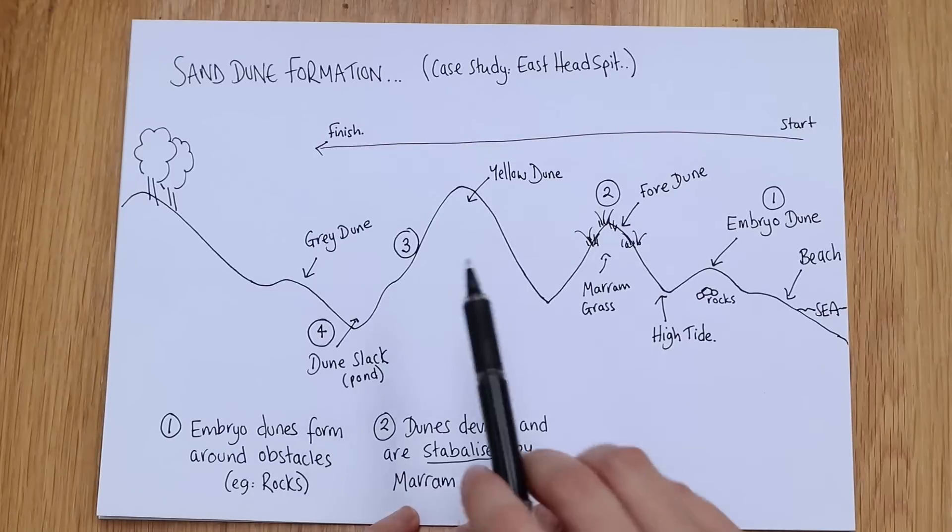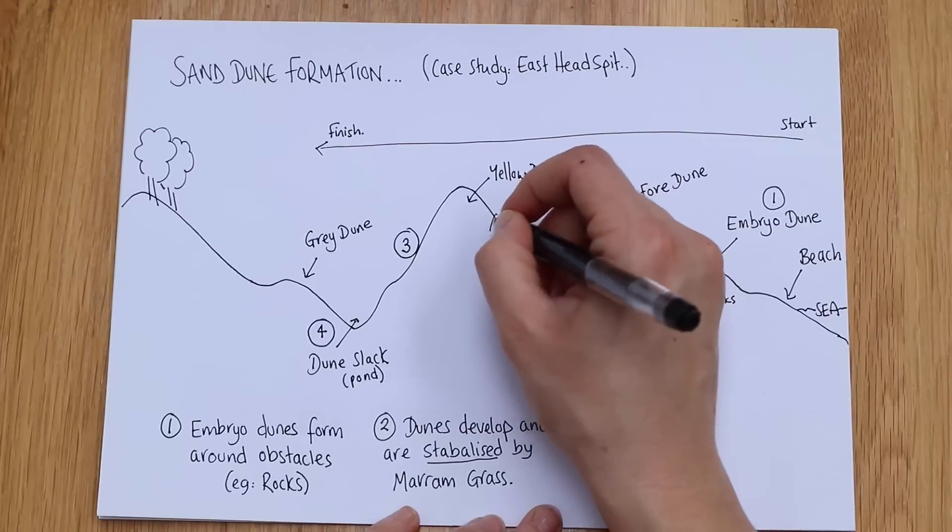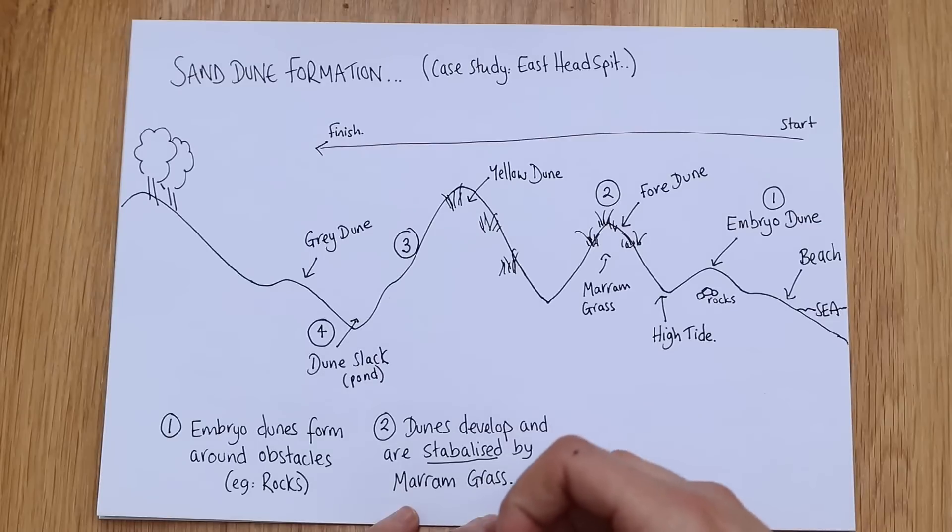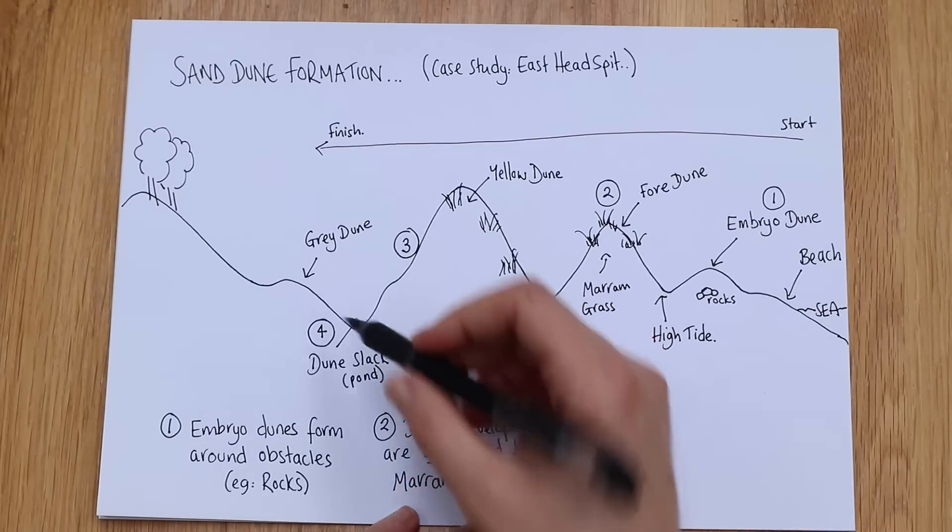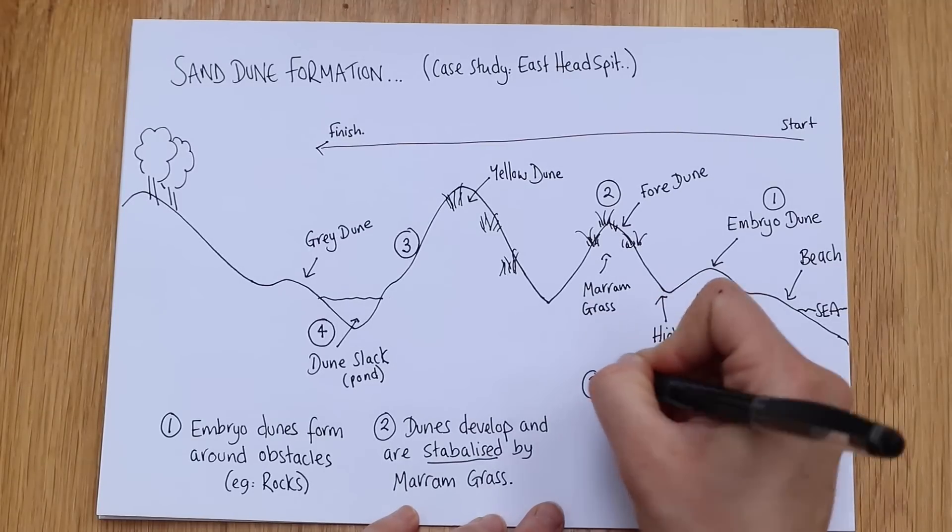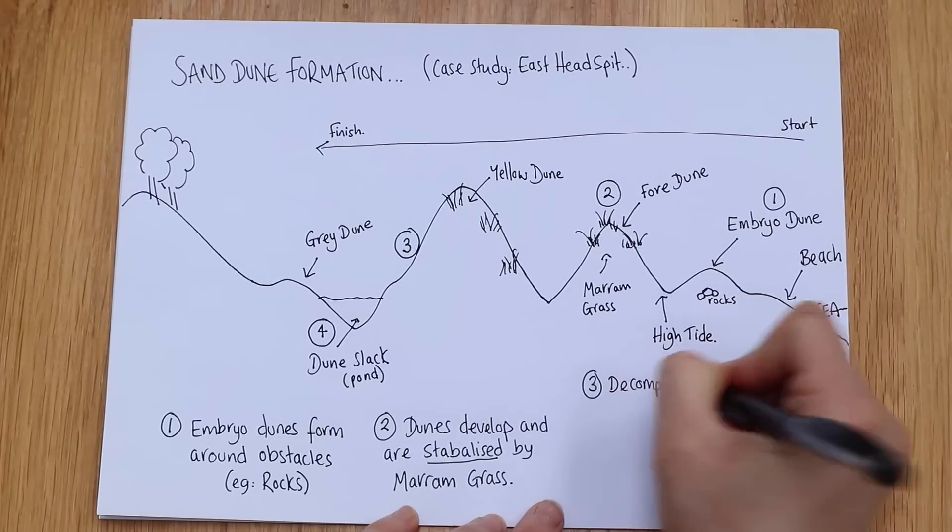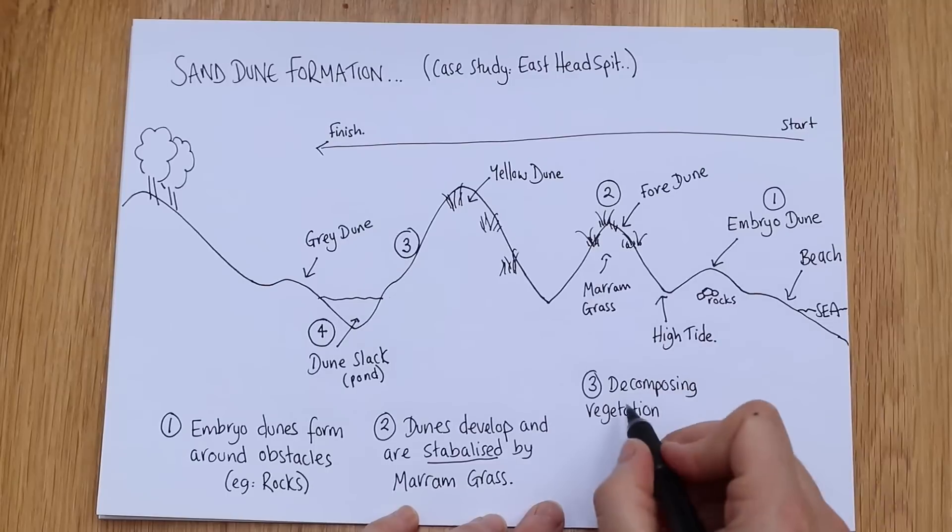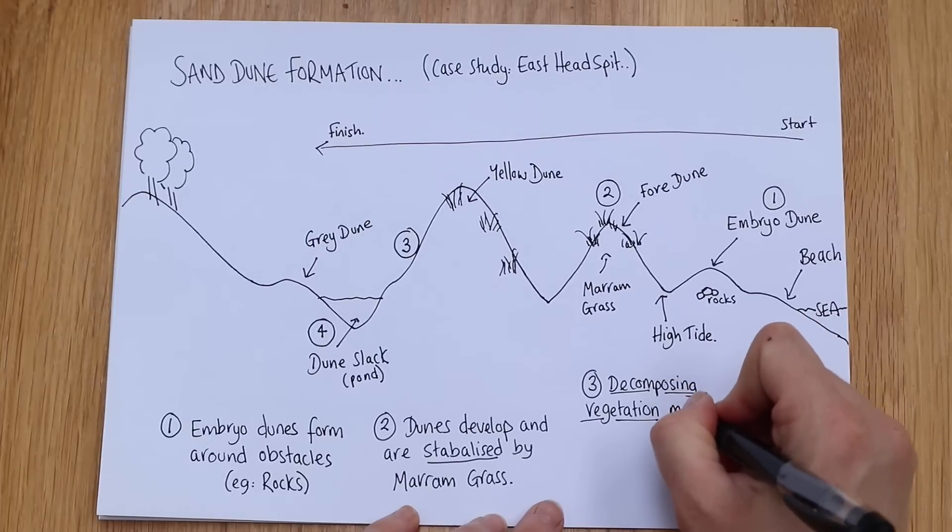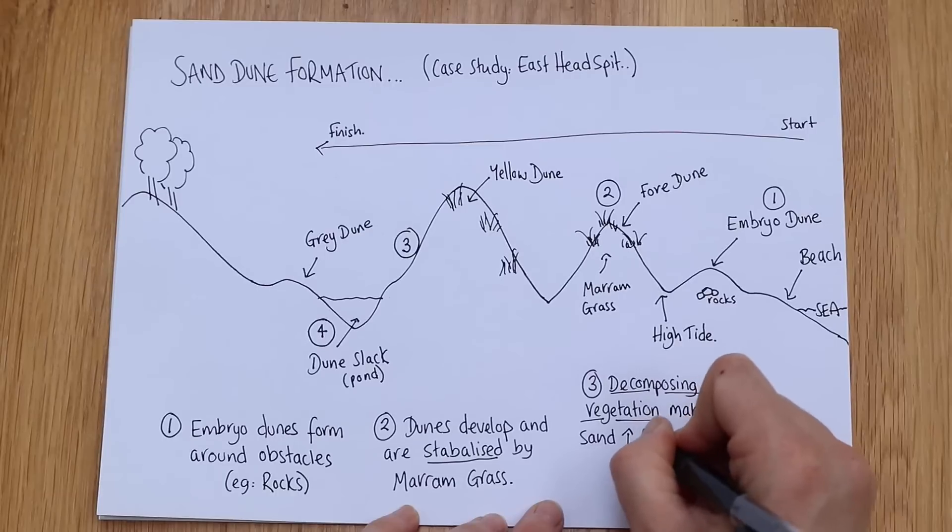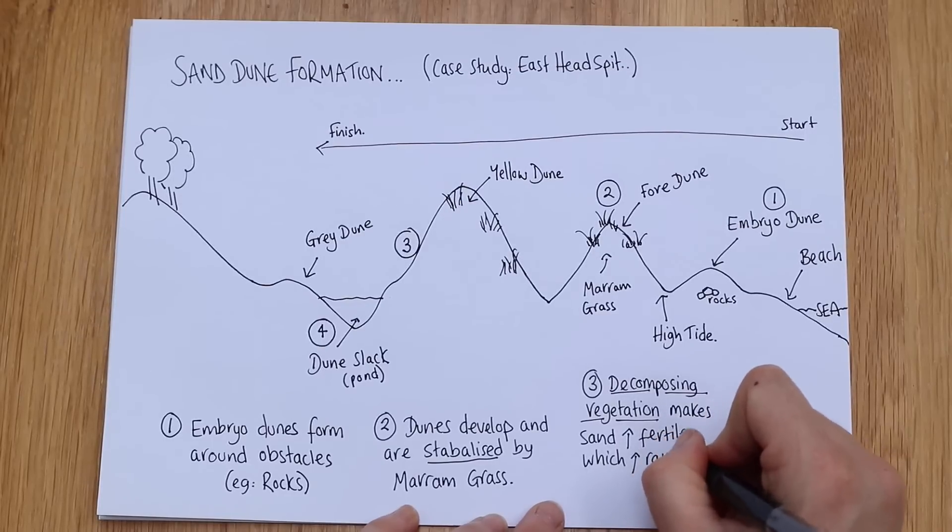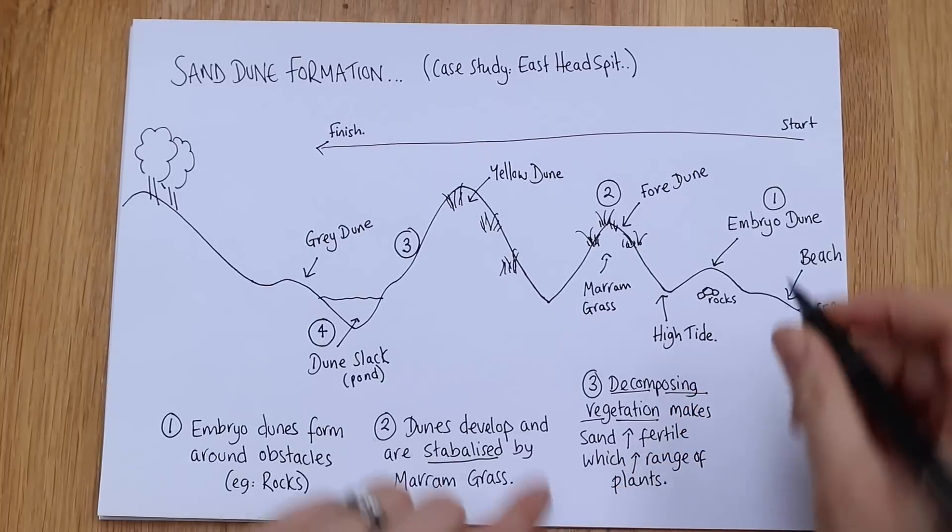Now number three, I sort of popped it over here, but basically the other dunes have got grasses on as well. And as we know, grasses decompose. They don't last forever. They can die out. And what happens is as they decompose they make the sand more fertile, which can then increase the range of plants that you can see in it. So number three we want the word decomposing vegetation. These are your geographical words, these are the kind of words we want you to use in the exam, especially if you get one of those SPAG questions. But yeah, decomposing vegetation makes the sand more fertile, which in turn increases the range of plants. So you'll see not just marram grass on these further back dunes.